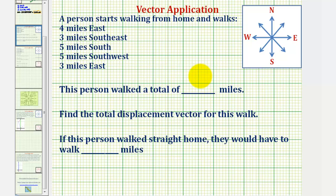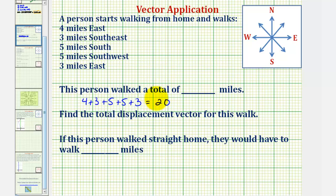To answer this first question, we just sum these five distances. So we would have four plus three plus five plus five plus three miles, which equals twenty miles. So the person walked a total of twenty miles.